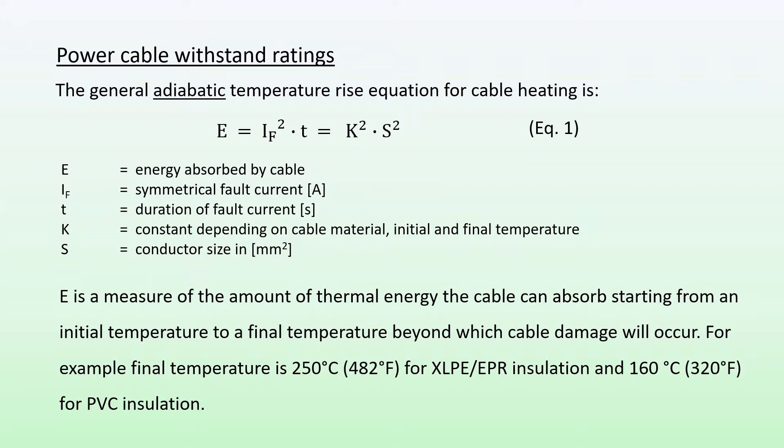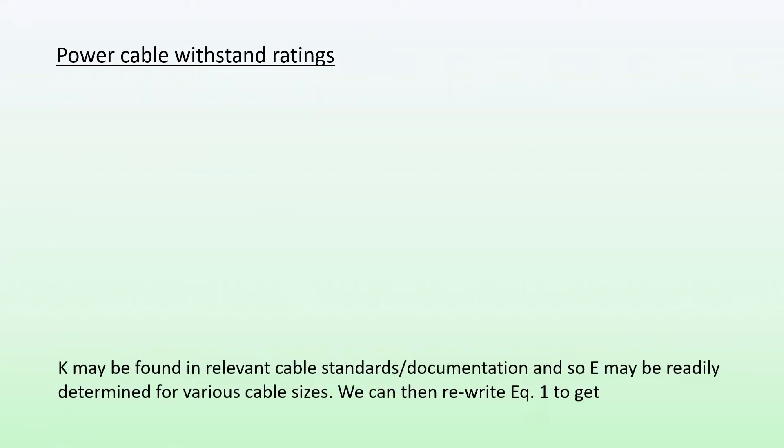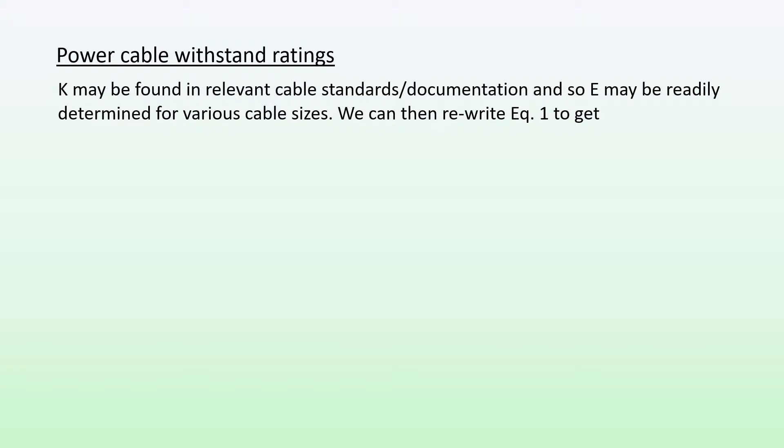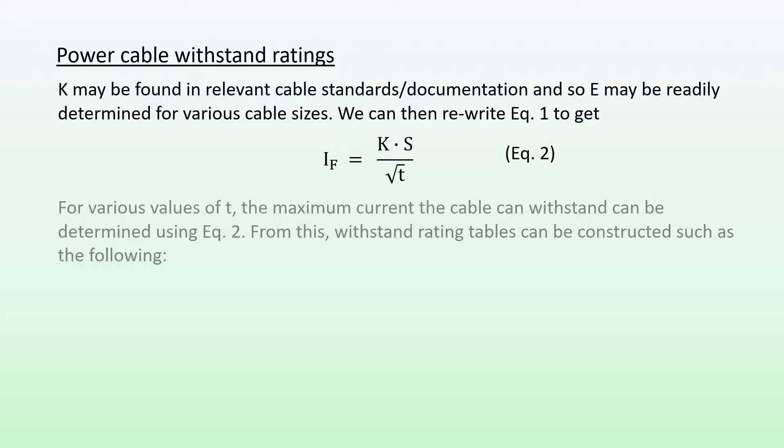For example, final temperature is 250 degrees for XLPE and 160 degrees for PVC. K may be found in relevant cable standards documentation, and so E may be determined for various cable sizes. We can then rewrite equation one to get that the fault current is the product of K and the cable size S divided by the square root of t. For various values of t, the maximum current the cable can withstand can be determined using equation two.